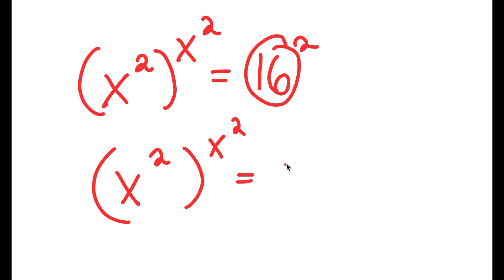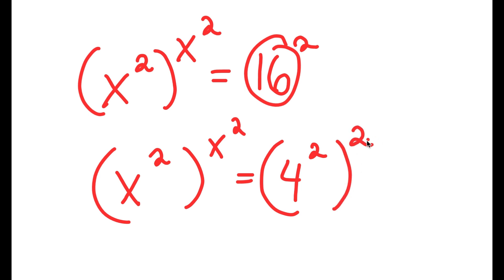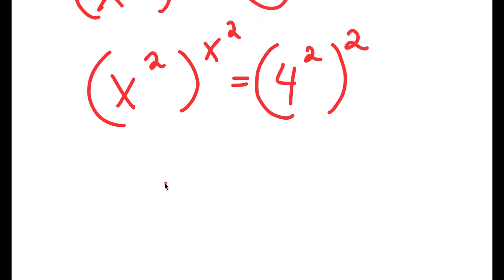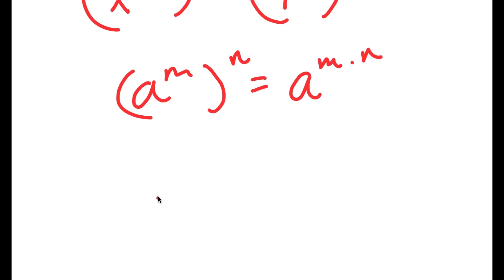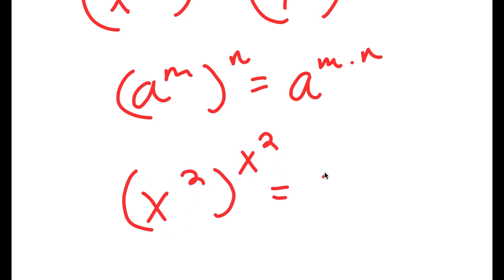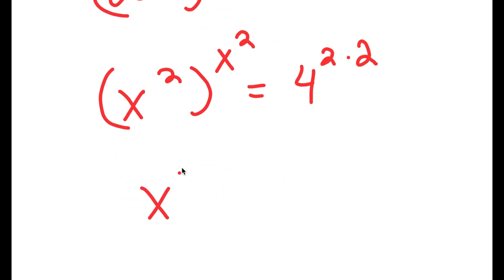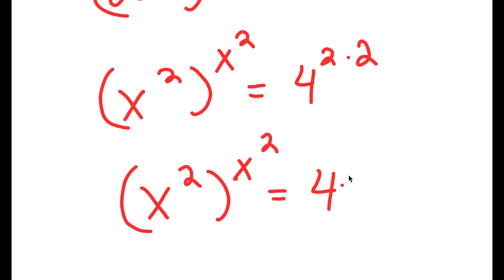Now, 16 I can rewrite as 4 squared. So I get 4 squared to the power of 2. Remember, if I have something in the form a to the power of m to the power of n, this equals a to the power of m times n. So 4 to the power of 2 to the power of 2 equals 4 to the power of 2 times 2, which is equal to 4 to the power of 4.